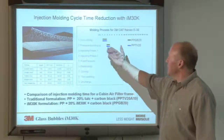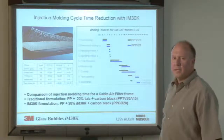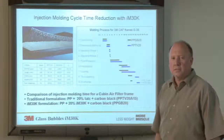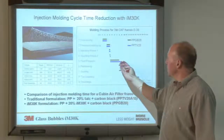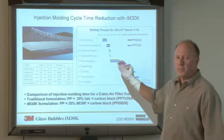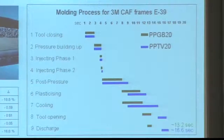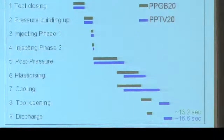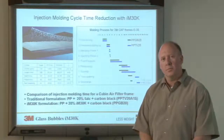In this graph, you have the different parts of the injection molding cycle, with time in seconds along the top. The glass bubble cycle is indicated with the green line and the talc-containing material — the old formulation — indicated with the blue line. You can see there's a shorter period of time needed for post-pressure hold time, cooling, tool opening, and discharge. On this 16.6-second cycle time, we're able to save 3.4 seconds, which is very significant if you're manufacturing a part 365 days a year — you can produce many more parts per unit of time.